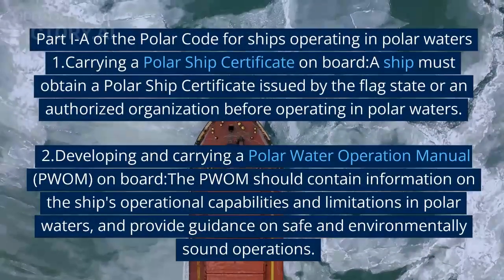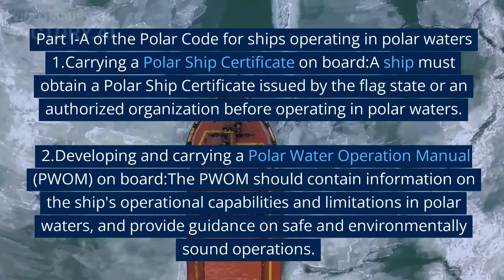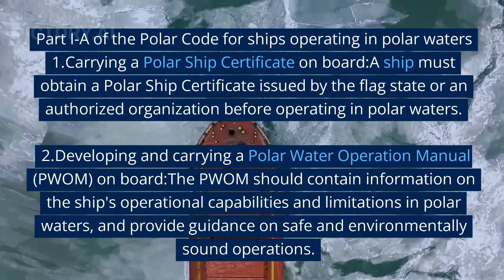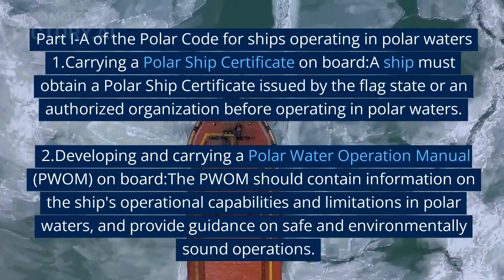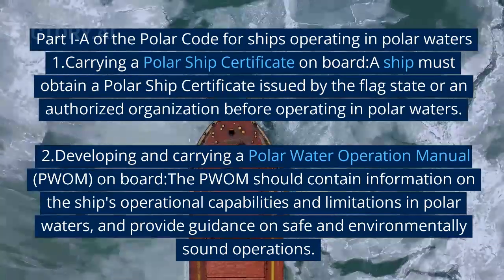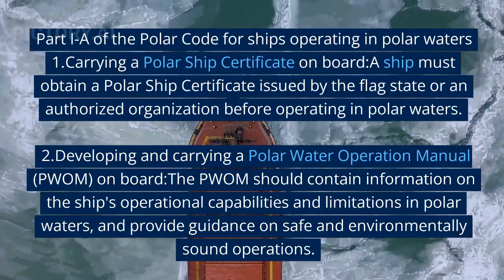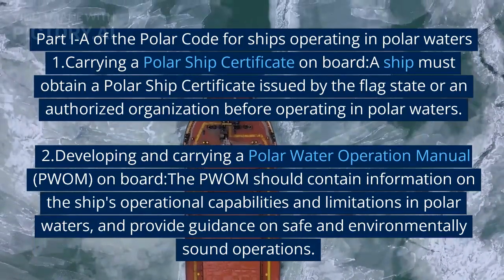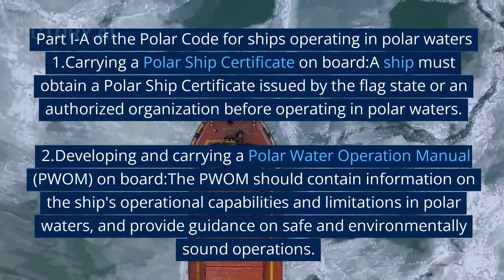Part 1A of the Polar Code for ships operating in polar waters requires: first, carrying a Polar Ship Certificate on board — a ship must obtain a Polar Ship Certificate issued by the flag state or an authorized organization before operating in polar waters. Second, developing and carrying a Polar Water Operation Manual (PWOM) on board — the PWOM should contain information on the ship's operational capabilities and limitations in polar waters and provide guidance on safe and environmentally sound operations.